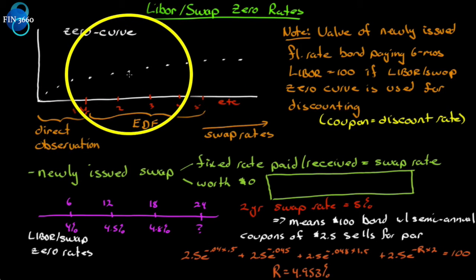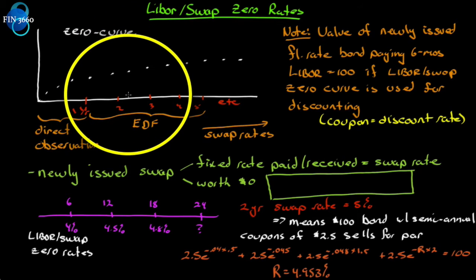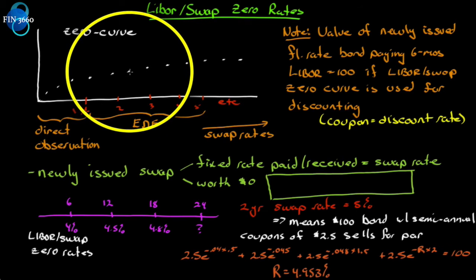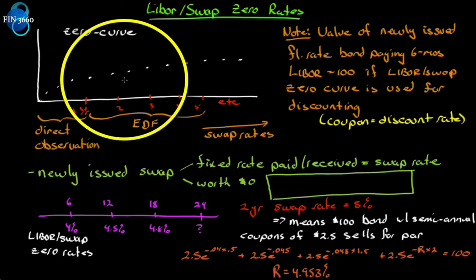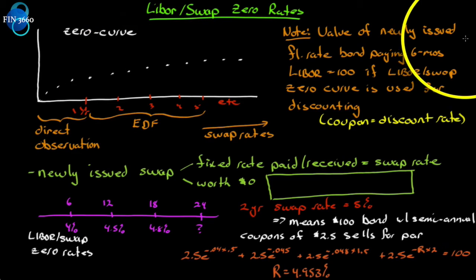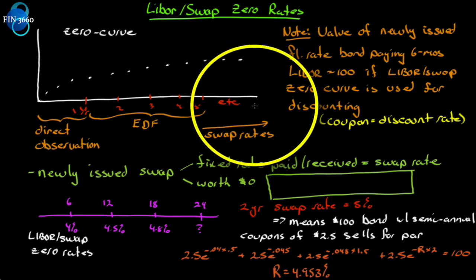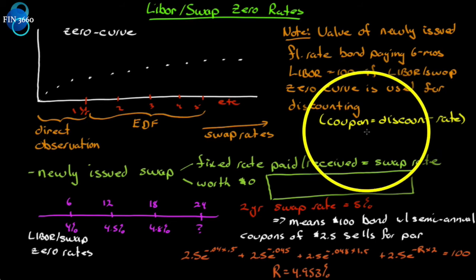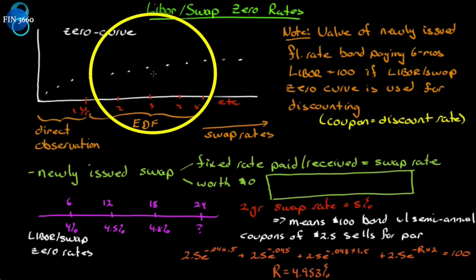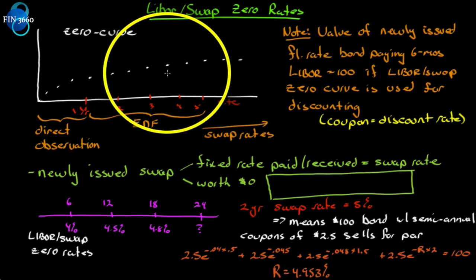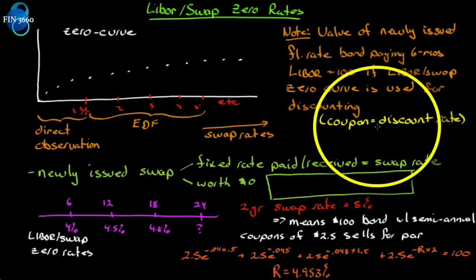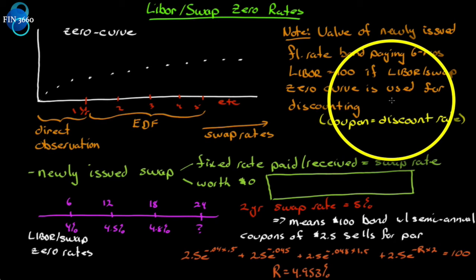The zero curve is the interest rate at a particular point in time that we use, the risk-free rate, to discount the cash flow received at that time. Have a look at this note that I made on the side here. The value of a newly issued floating rate bond paying six-month LIBOR is equal to 100 if the LIBOR or swap zero curve is used for discounting. Why? It's because the coupon will equal the discount rate. If the coupon equals the discount rate, you have a par bond.